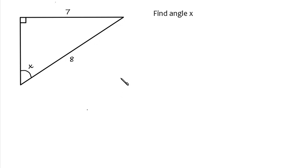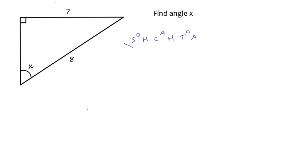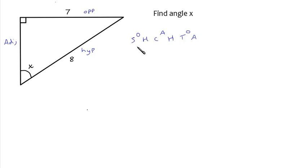Here's a straightforward question. We've got a right-angled triangle with two side lengths given — 8 and 7 — and an angle marked X, and we're asked to find angle X. First, write down SOHCAHTOA. Then label the side lengths: the side opposite the right angle is the hypotenuse; the side opposite the angle we're interested in is the opposite; and the side next to the angle is the adjacent. We know the opposite and we know the hypotenuse, and it's the sine that connects those two, so we're going to use the sine formula.